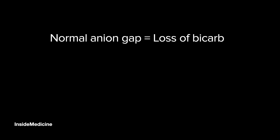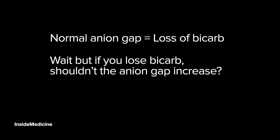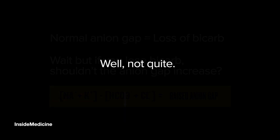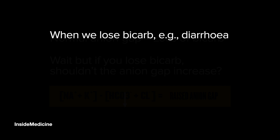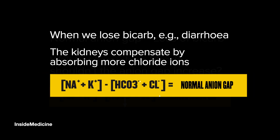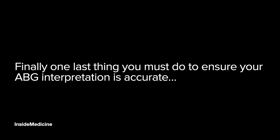In a normal anion gap acidosis, there is loss of bicarbonate — for example, in diarrhea or renal tubular acidosis. You might think losing bicarbonate should raise the anion gap, but the kidneys compensate by absorbing more chloride ions. So we lose bicarb but gain chloride, keeping the anion gap normal. This is also why this type is called hyperchloremic acidosis — because there are more chloride ions in the blood.